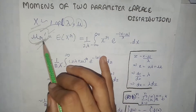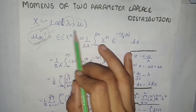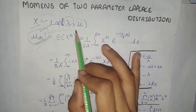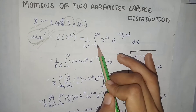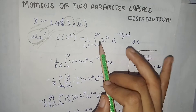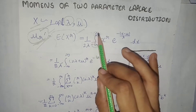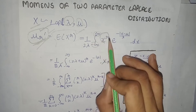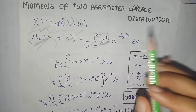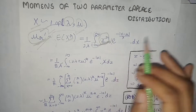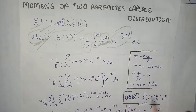We will calculate the rth moment about mean, which is equal to the expectation of x raised to power r. According to the definition of expectation, we get integration over the whole values of x — that means in the two-parameter Laplace distribution, x lies between minus infinity to infinity. We write the term whose expectation we are finding, multiplied by the PDF of the two-parameter Laplace distribution, that is multiplied by 1 divided by 2λ.